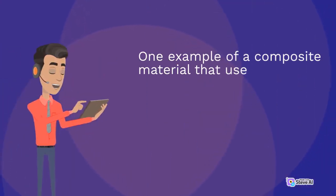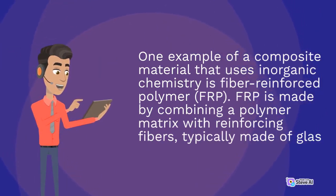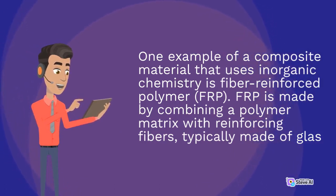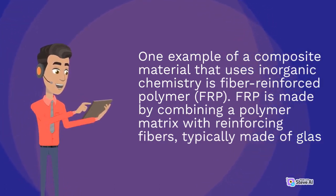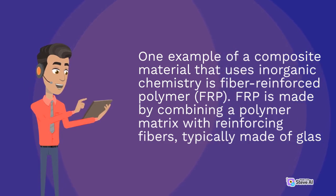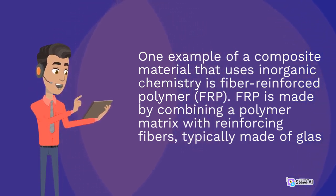One example of a composite material that uses inorganic chemistry is fiber-reinforced polymer, FRP. FRP is made by combining a polymer matrix with reinforcing fibers, typically made of glass.